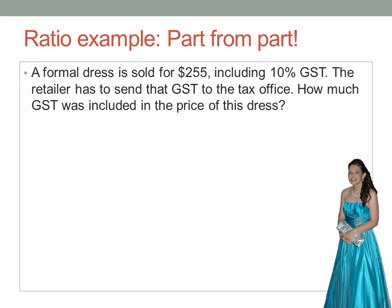A formal dress is sold for $255, including 10% GST — that's the standard tax rate in Australia. The retailer has to send the money for the GST to the tax office.